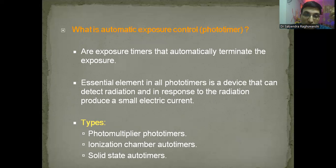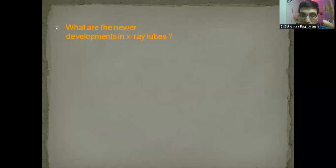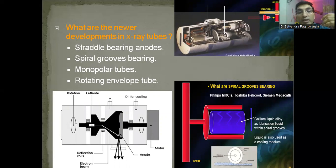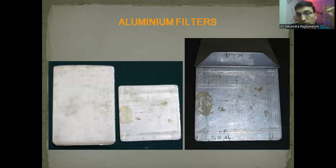What is automatic exposure control or phototiming? In latest x-ray machines and digital mammography machines, we have AEC — automatic exposure control. What happens there? We have a phototimer, and when an x-ray beam passes through it, the machine automatically decides how much exposure is to be given and what the duration of exposure should be. This is more than enough for table viva. What are the newer types of x-ray tubes? Simply remember the names: straddled bearing anodes, spiral groove bearing, monopolar tubes, and most importantly, rotating envelope tube — where the whole envelope actually rotates.